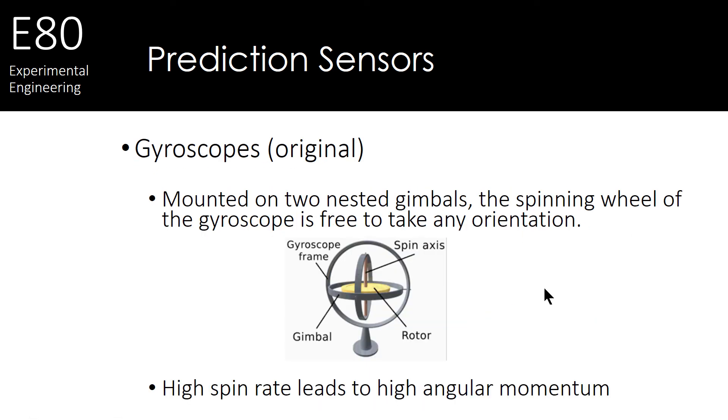The gyroscopes, another sensor typically found on these IMUs, is something used to measure rotational rate. Now here's an old school mechanical version of a gyroscope. In this case, we mounted within two nested gimbals a spinning wheel. And it's free to take on any orientation.